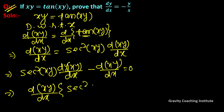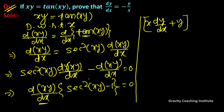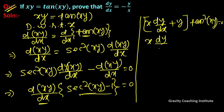So sec²(xy) minus 1 equals 0. Applying the product rule: x into dy/dx plus y into 1, and tan²(xy) equals 0, giving x·dy/dx plus y equal to 0.